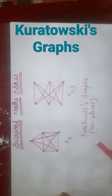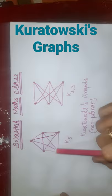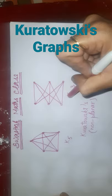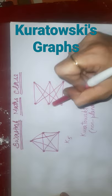What is Kuratowski's graph? These two graphs are Kuratowski's graphs. This is Kuratowski's first graph, which is K5 — the complete graph on 5 vertices. And this is Kuratowski's second graph, represented by K3,3, which is a complete bipartite graph on 3 vertices on both the partitions.